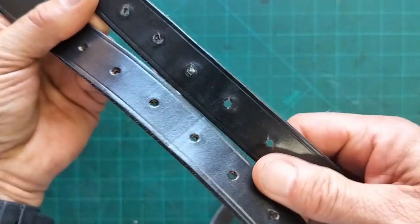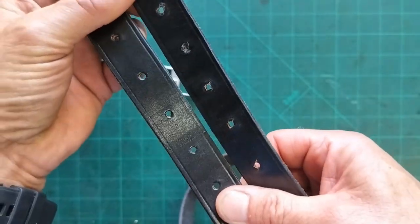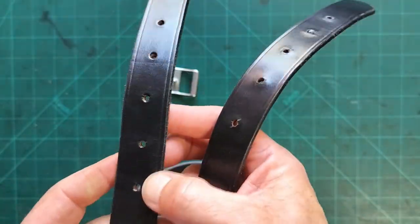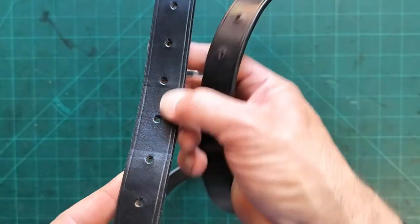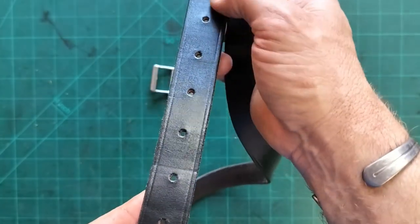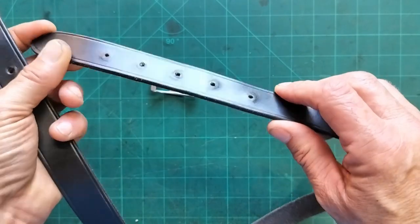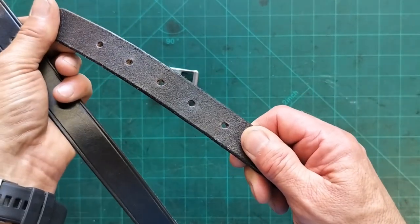Now if you look at the holes, you can actually see there are some differences of how they're done. So this one here, this is going to be my outside, so this is the bit you'll see. The holes are punched from this side, from the grain side of it. And this side here is the standing end, and the standing end has got the holes punched from the flesh side.